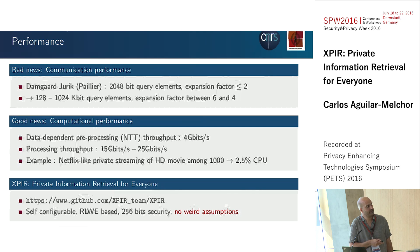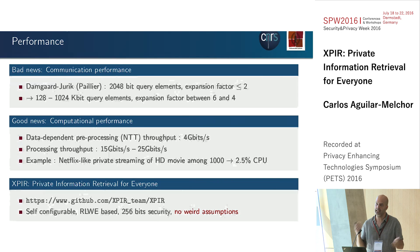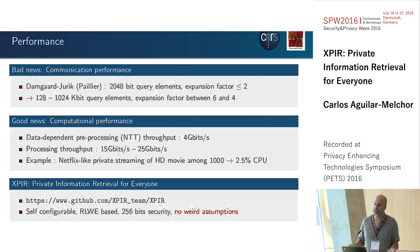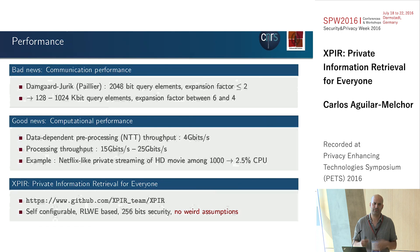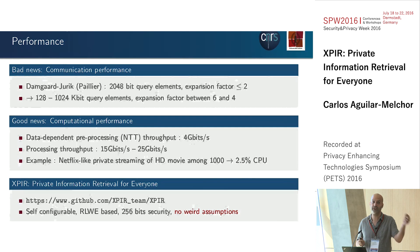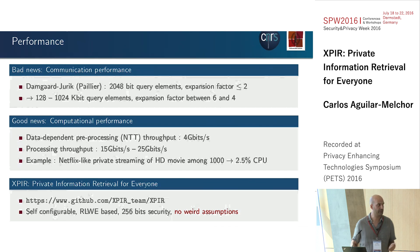If preprocessing before the PIR query is possible, great. If your database is very dynamic and you cannot do that, you will answer queries processing the database at 4 gigabits per second, which is already faster than almost any realistic connection. For example, you can take a 1,000-movie database, watch a movie in real-time in HD, and use only 2% of the server CPU — so a single CPU can handle 40 clients watching HD movies on a private database.